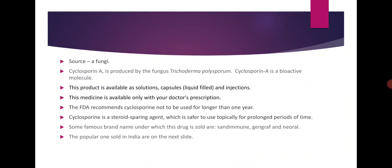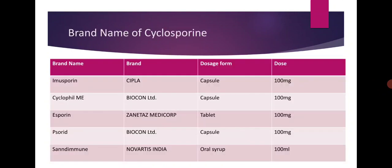Some famous brand names under which the drug is sold are Sandimmune, Gangreph, and Neoral. Popular brands sold in India include Immuosporine, manufactured by CIPLA in 100 mg capsule form; Cyclophil M, manufactured by Biocon Ltd. in 100 mg capsules; Asporine Tablet by Zentes MediCorp at 100 mg; and Sorid capsule by Biocon Ltd. at 100 mg.